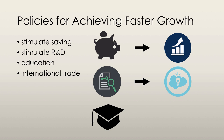We can also increase the quality of education. Because the free market produces too little education — it brings benefits to those beyond who are actually consuming it — it is under-provided by the free market. So governments can fund basic education, and this will increase human capital and thus increase potential GDP.